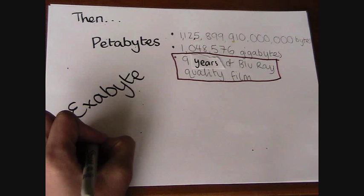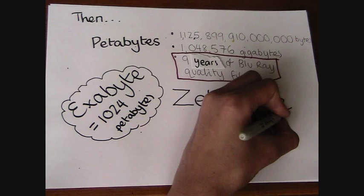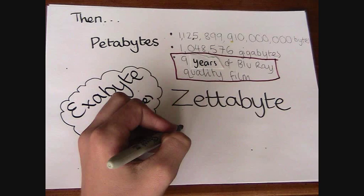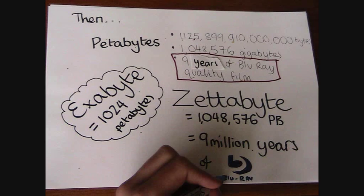Then there's an exabyte, which is 1,024 times bigger than a petabyte. And finally, there's the zettabyte, which is equivalent to 9 million years of Blu-ray quality film.